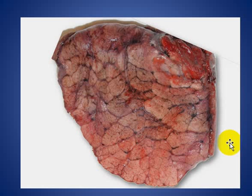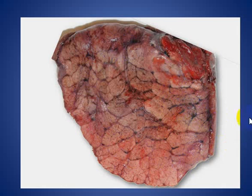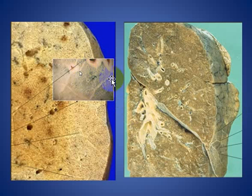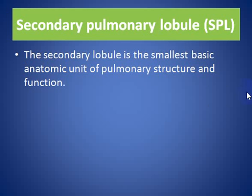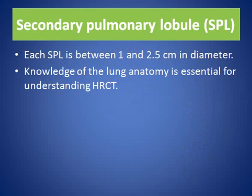Here we see an external surface of the lung with multiple secondary lobules separated by lymphatics. A magnified one, as we see here. The secondary pulmonary lobule is the smallest basic anatomic unit of pulmonary structure and function. Each secondary pulmonary lobule is between 1 and 2.5 cm in diameter. Knowledge of the lung anatomy is essential for understanding of high-resolution CT scan of the lung.